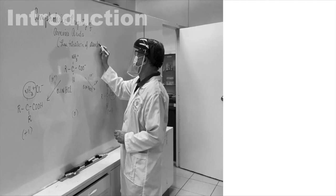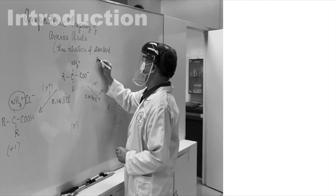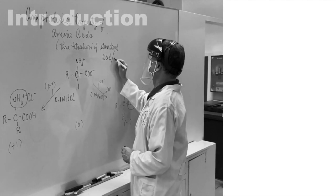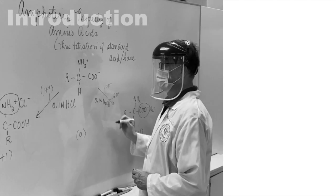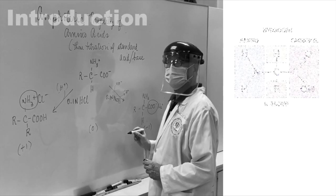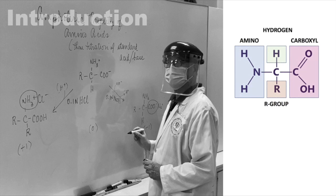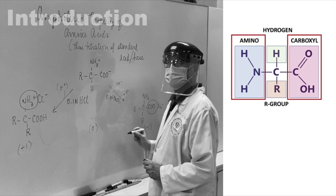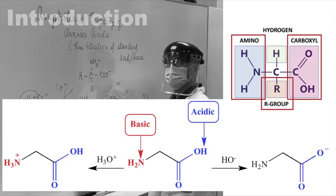In this laboratory activity, we will be demonstrating the amphoteric property of amino acids — that is, their acid-base behavior. Amino acids have ionizable groups, namely the alpha-carboxyl group, the alpha-amino group, and in some amino acids, an ionizable R group. These groups behave as either acid or base by donating or accepting protons, respectively, depending on a given pH level.